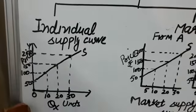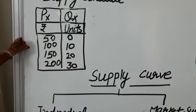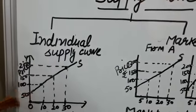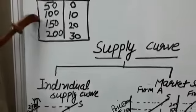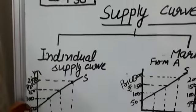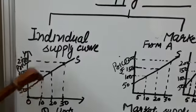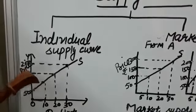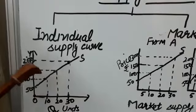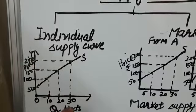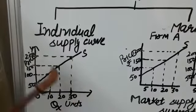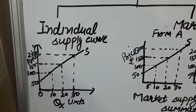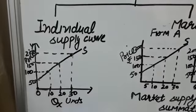This curve is drawn on the basis of the above schedule. When price is Rs. 50, the producer is not willing to sell even a single unit, so supply is 0. When price rises to Rs. 100, supply is 10 — the same is shown in the diagram. When price is Rs. 150, the seller is ready to sell 20 units, and when price is Rs. 200, supply is 30 units. When we join these points, we get a curve known as the supply curve, indicating a positive slope.